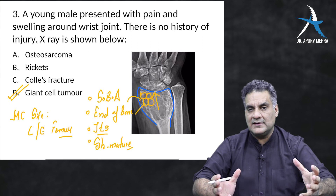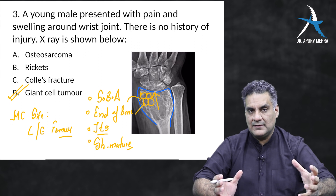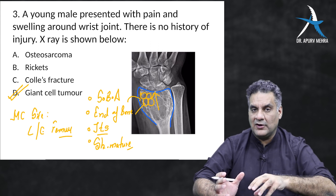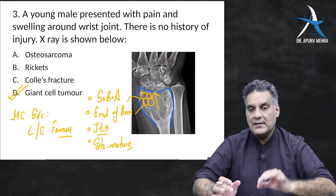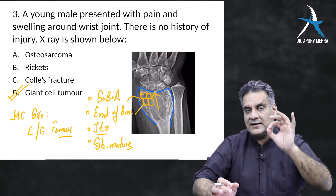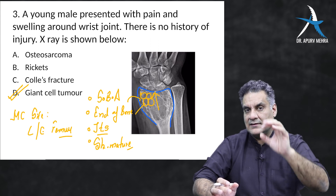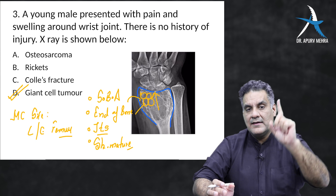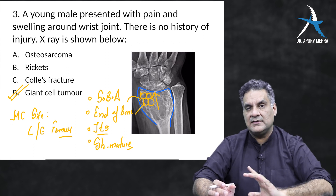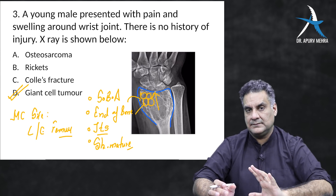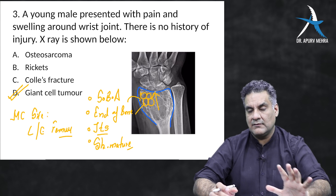GCT commonly occurs at the lower end of the femur, but if they show you the lower end of the radius with a lytic lesion, think GCT. The image of GCT at the lower end of radius is the number one image asked in entrance exams in India across all 19 subjects.